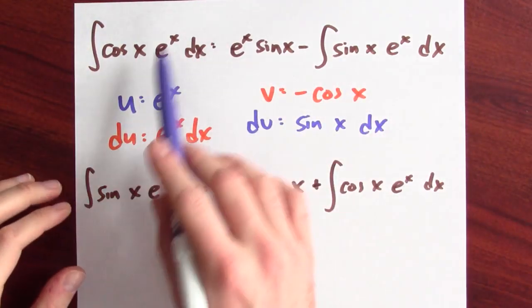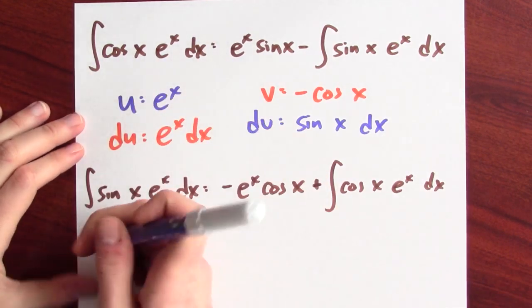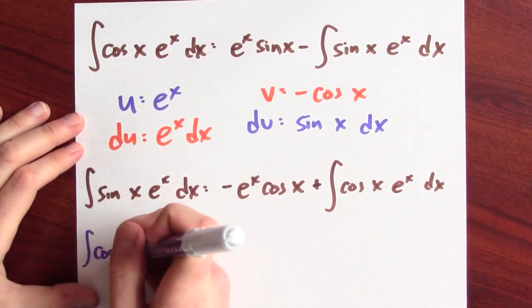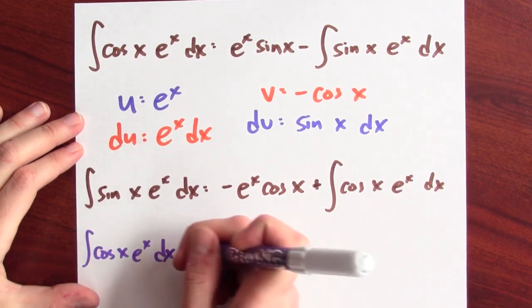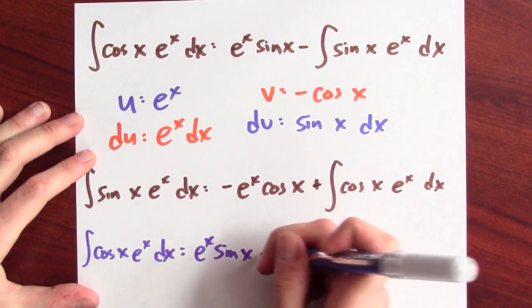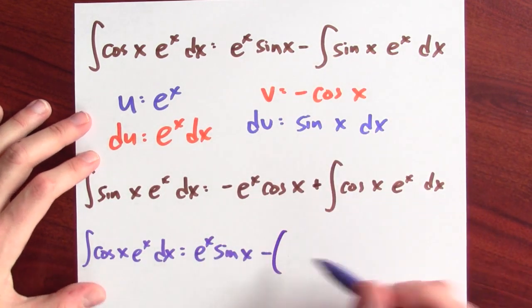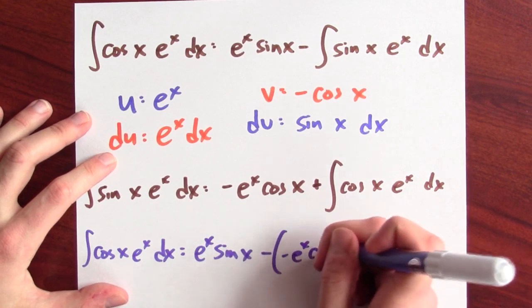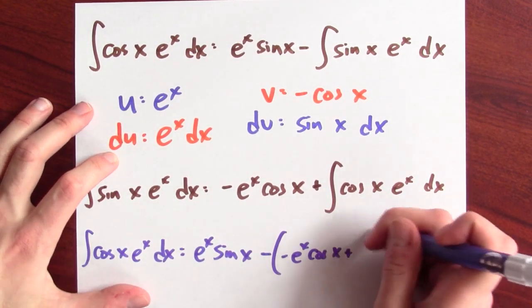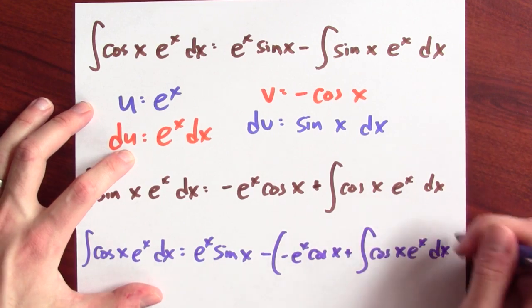Well, what happens if I put these two integration facts together? Well, I've got here the integral of cosine x e to the x dx is equal to e to the x sine x minus the integral of sine x e to the x dx, which is down here. So, minus negative e to the x cosine x plus the integral of cosine x e to the x dx. Let's persevere. Let's keep going.